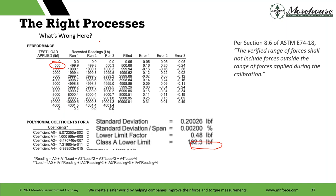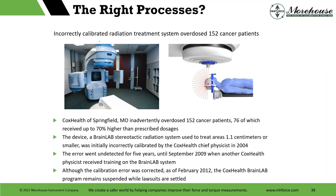Somebody reads the standard, doesn't fully know it, a customer asks them to make a calibration in accordance with it, and all of a sudden they do things they don't know any better. So here at Cox Health: 152 cancer patients, 76 of which received up to 70% higher than prescribed dosages. This was a BrainLab stereotactic radiation system used to treat tumors 1.1 centimeters or smaller, and it was initially incorrectly calibrated by Cox Health's chief physicist. The error went undetected for five years until somebody else received proper training.